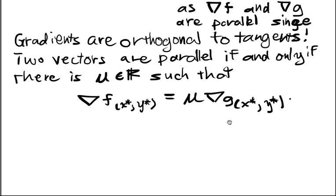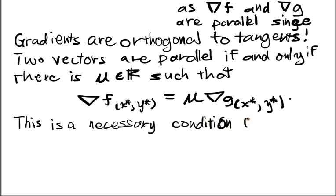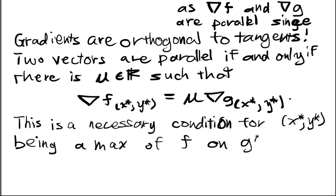This is great. This encodes exactly what we want for our necessary condition. This encodes exactly that condition in a nice simple equation. This is a necessary condition for x star, y star being a max of f on g(x, y) equals c. I guess we started off with x1, x2, but I guess we've switched over to x and y now. So that's my fault, but let's keep going.